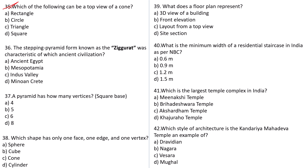Question number 36: The stepping pyramid form known as the ziggurat was characteristic of which ancient civilization? This is a very basic question from history of architecture — try to solve it. Question number 37: A square-base pyramid has how many vertices? Calculate and let me know the answer. Question number 38: Which shape has only one face, one edge and one vertex? These types of questions can come in your NCQ section.